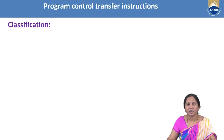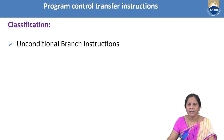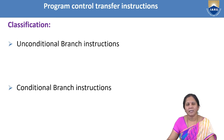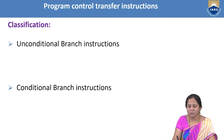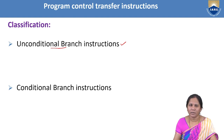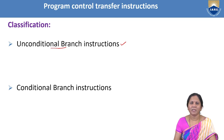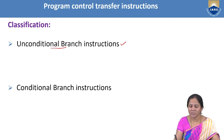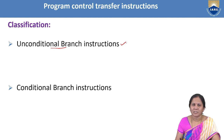Coming to the classification, the Programme Control Transfer Instructions are classified into different types: Unconditional Branch Instructions and Conditional Branch Instructions. The name 'Unconditional Branch Instruction' specifies that this type of instructions are executed when the condition is not met — that means no need to satisfy any condition to make the control transfer. Such type of instructions come under Unconditional Branch Instructions.